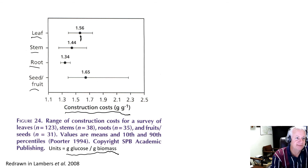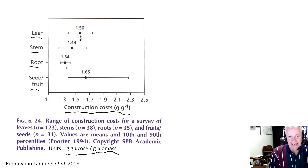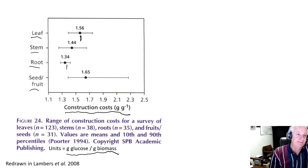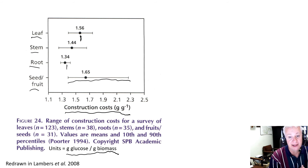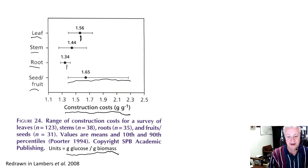If you think about it a little, you can see why a leaf might cost more to construct than a root. A leaf has a lot more living cells and more proteins than root tissue, which is essentially mostly xylem tissue that is mostly dead when functional. So leaf tissue costs more to construct. Seeds and fruit have a wide range but in general have higher construction costs because they contain more lipids and more protein, so their construction cost is generally higher than other tissues.